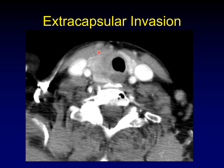Extracapsular invasion: when you can no longer see the edge of the mass with relation to the remainder of the thyroid gland or with relation to the surrounding structures like the strap muscles. Another really important place to look is the tracheoesophageal groove — you should see fat there. When an aggressive thyroid mass extends beyond the capsule, it can destroy that fat in the tracheoesophageal groove and spread into it. That's an important finding of extracapsular invasion.